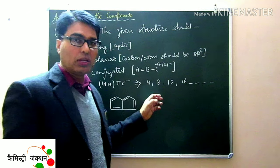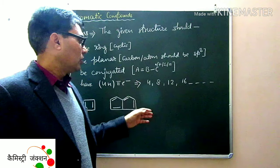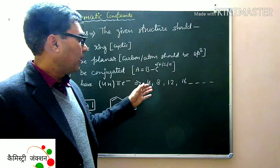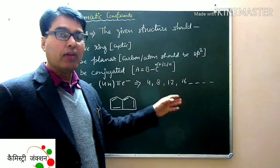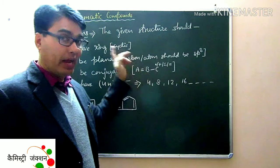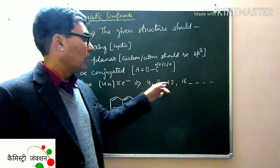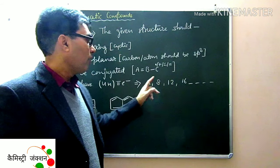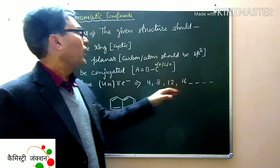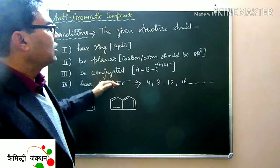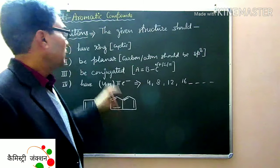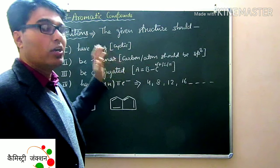The fourth condition is the 4n pi electron rule. The number of pi electrons starts from 4, then 8, 12, 16, 20, and so on. This follows the 4n series.